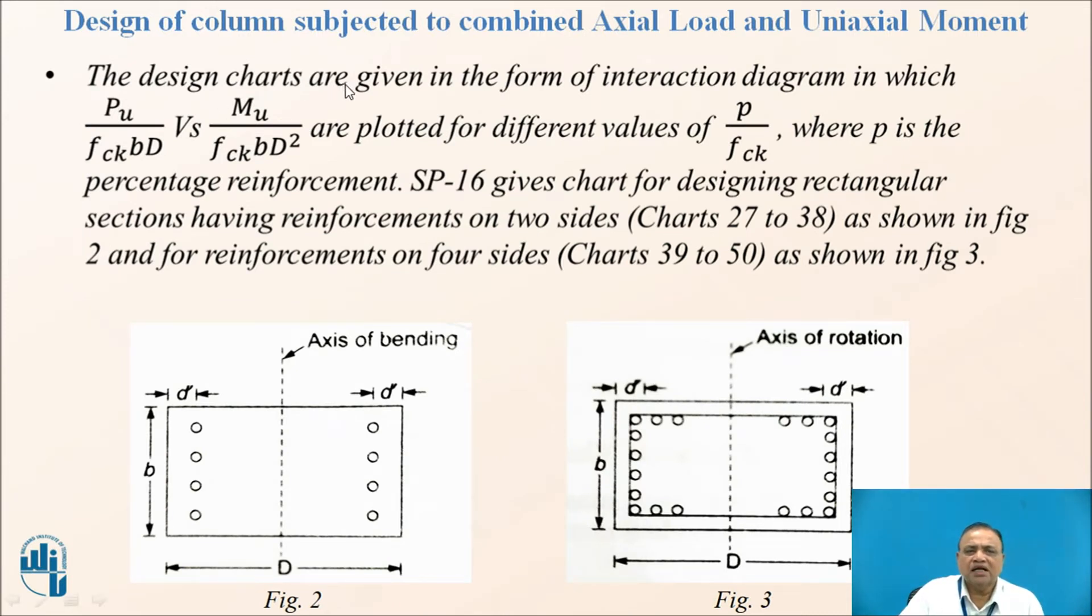Now, the design charts are given in the form of interaction diagrams in which PU upon FCKBD versus MU upon FCKBD square are plotted for different value of P by FCK. P is percentage steel. SP16 gives a chart for designing rectangular sections having reinforcement on two sides, chart number 27 to 38 as shown in figure 2. The reinforcement on four sides as shown in figure 3, the charts in SP16 is 39 to 50.